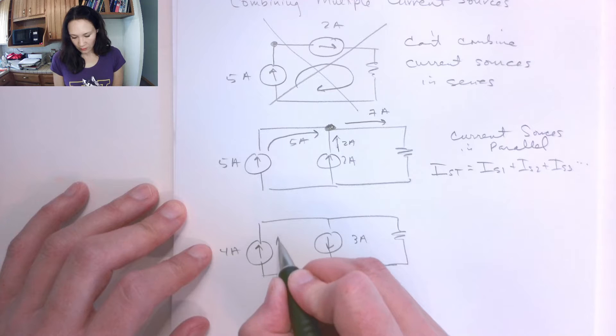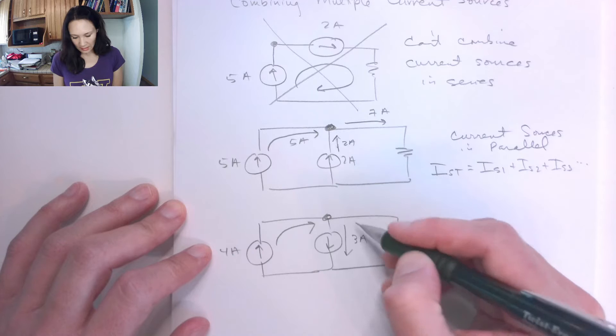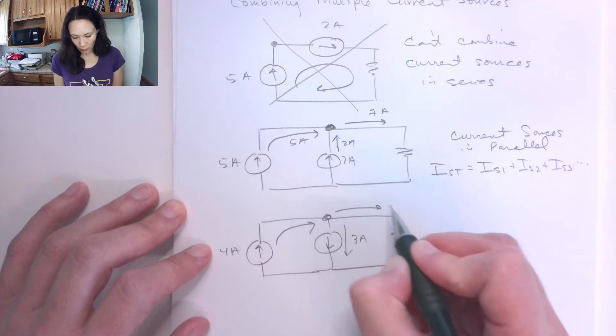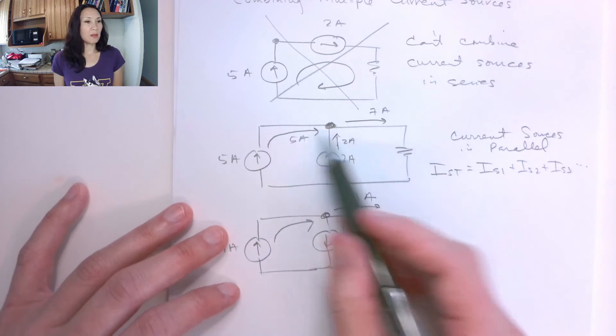Due to KCL, if we have 4 amps coming up this way, we know that 3 amps is taking this branch, so that means this is going to combine to 4 minus 3, which should be 1 amp. So in both of these cases, I can replace these 2 current sources with just 1 current source.